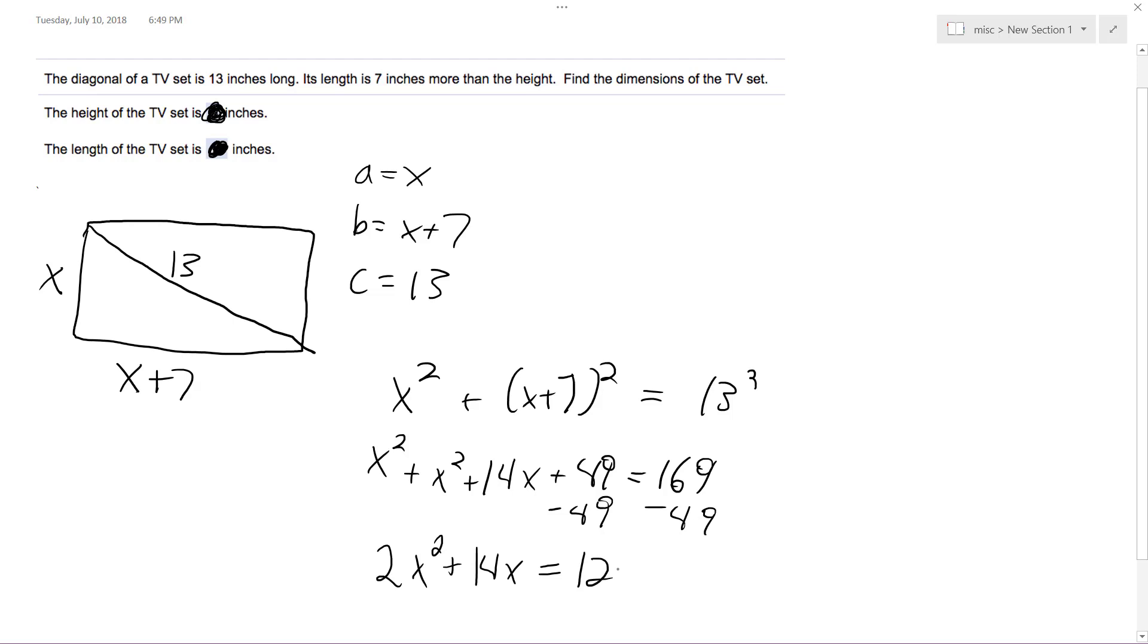Okay, so then I can divide through by 2, so what I end up with is x squared plus 7x minus 60 equals 0.